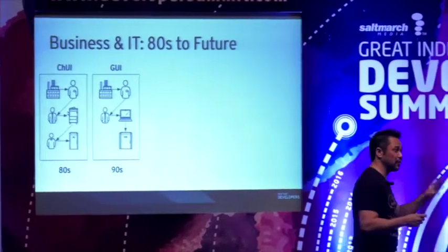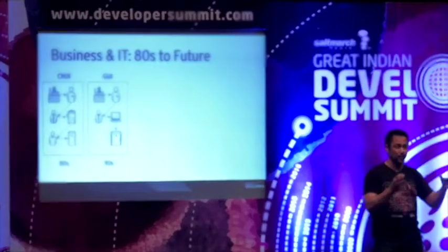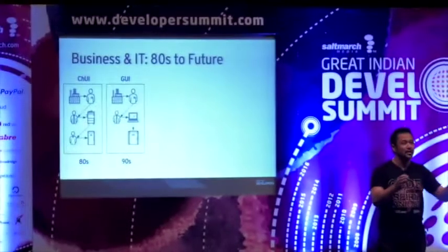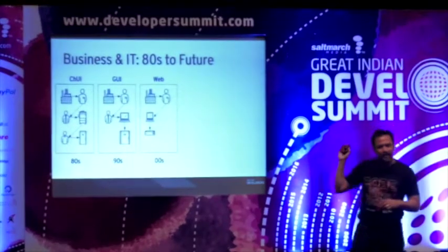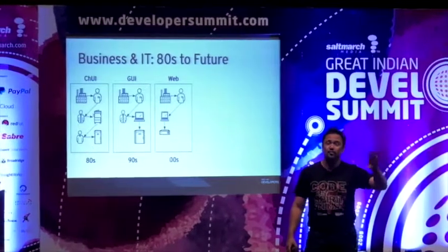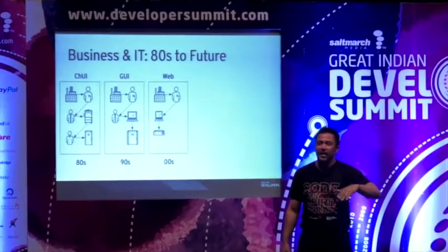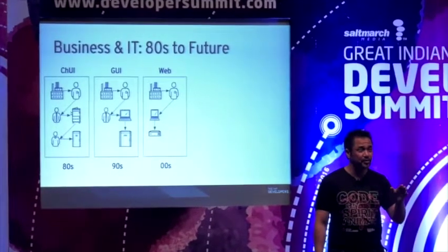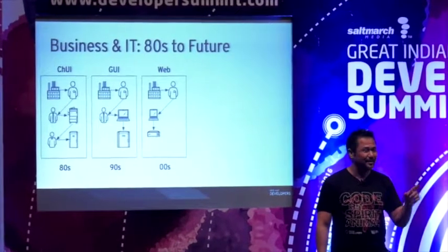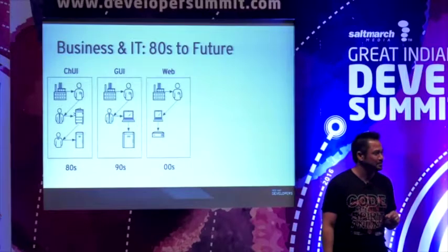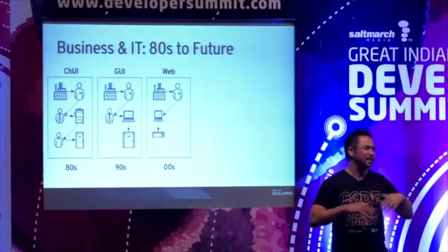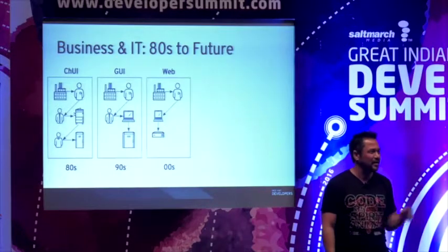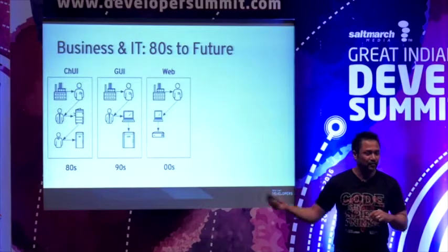In the 90s, we introduced the GUI — the graphical user interface — so the sales rep could type orders in themselves, and we thought we solved a huge problem by eliminating the back office person. Then in the early 2000s, we started building out web technology and the customer could self-service. This was a massive inflection point, because now customers use our software, not just employees. Employees had to accept whatever software we gave them — we could blame quality or training. But once customers touched the software, we had to build vastly better software.